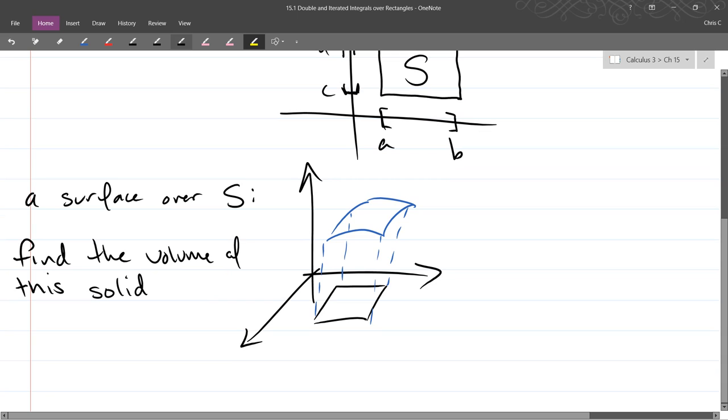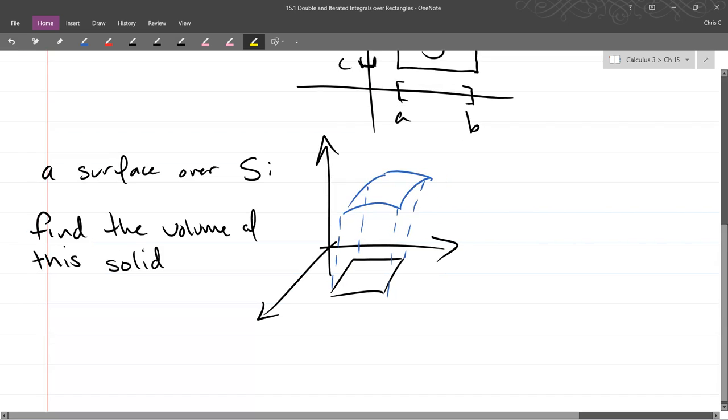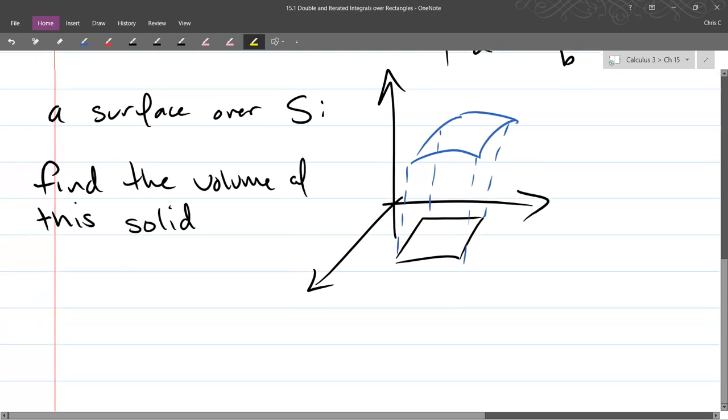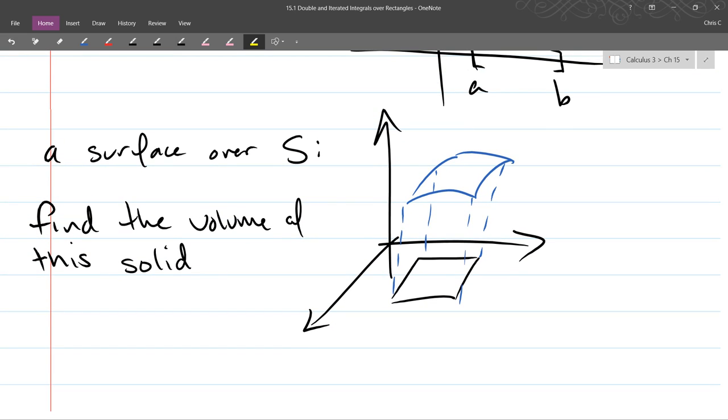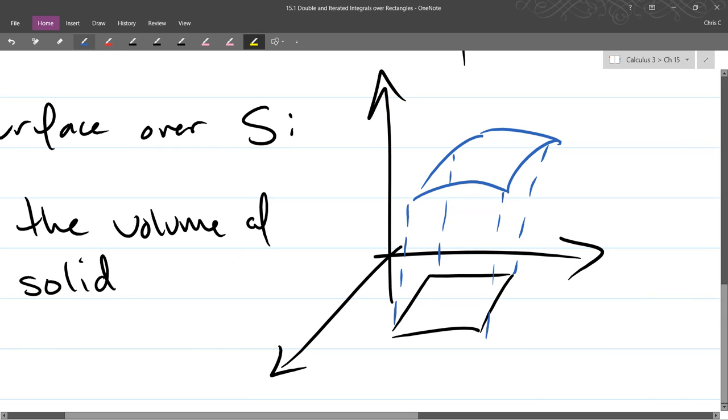So s is a rectangular region. We can draw that as a parallelogram on the floor, or the z equals 0 plane. And now, we're considering a surface over top of this. So there is some height function. Not quite over top, but sort of over top. So what we're going to do is try to get the volume of this shape that I just drew. How do we go about finding this volume? What are some ways we can estimate?